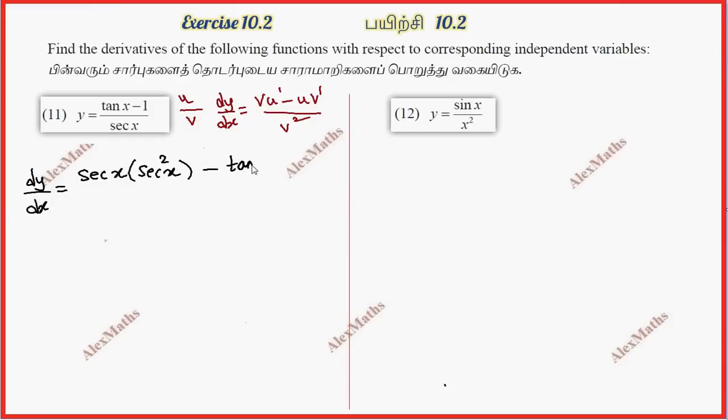u is tan x minus 1 into v dash, the derivative of secant x, which is secant x tan x. Whole divided by secant square x.